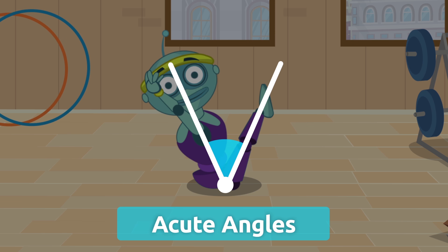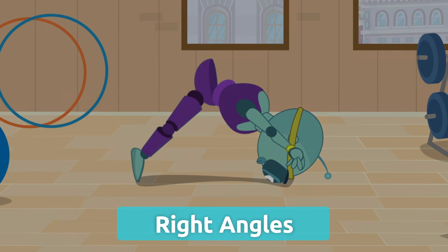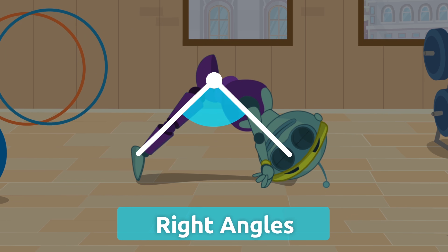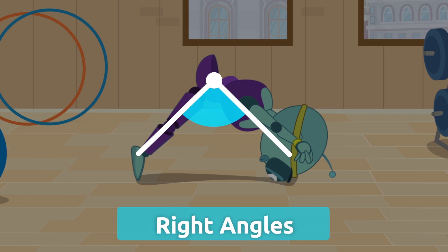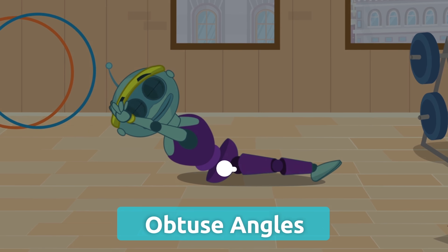Right angles are those angles that measure 90 degrees. Obtuse angles are those angles that measure more than 90 degrees and less than 180 degrees.